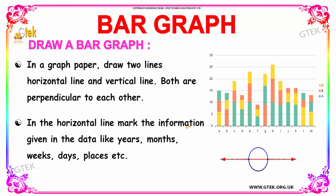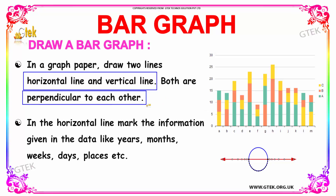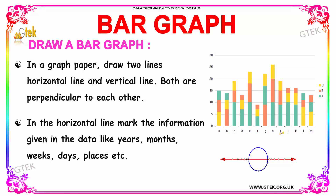Next, we are going to see how to draw a bar graph. On graph paper, you have to draw two lines — one in the horizontal direction and another in the vertical direction — and both are perpendicular to each other. In the horizontal line, mark the information given in the data, like years, months, weeks, days, places, etc. The values are placed on your vertical line. By mapping your horizontal and vertical values, you can find the data value using your bar graph.